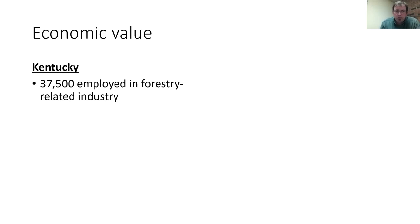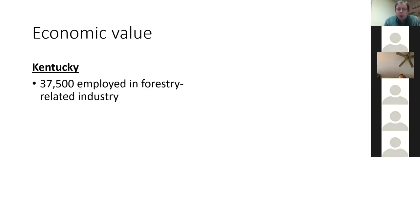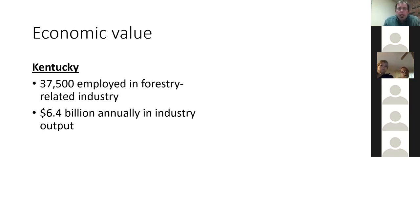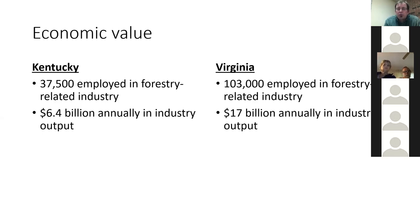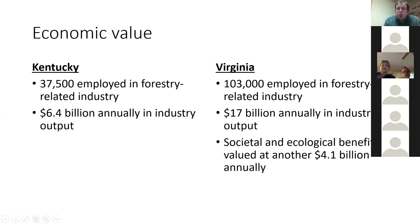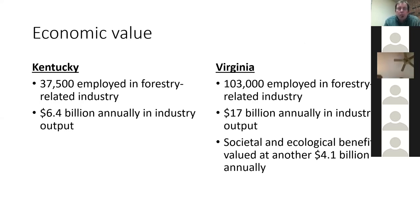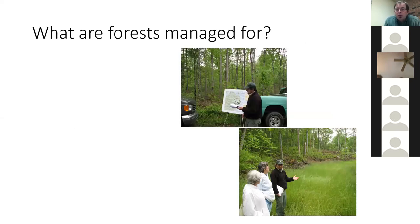In terms of economic value, 37,500 people are employed in forestry-related industry in Kentucky, amounting to $6.4 billion in industry output every year. In Virginia, 103,000 are employed, accounting for $17 billion in production annually. The societal and ecological benefits are valued at an additional $4.1 billion. When we talk about forests being managed well, what is that forest being managed for?